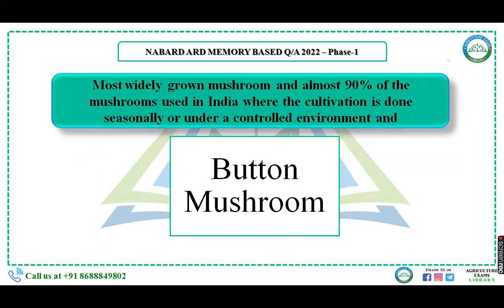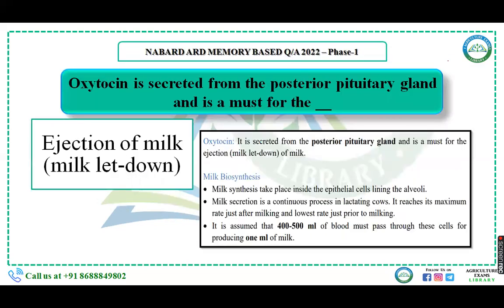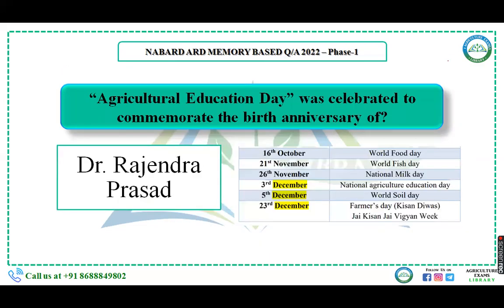The most widely grown mushroom, with almost 90 percent of mushroom cultivation in India, done seasonally or under a controlled environment, is the button mushroom. Oxytocin is secreted from the posterior pituitary gland and is essential for the ejection of milk — this question was also asked in IBPS. Agricultural Education Day is celebrated on the birth anniversary of Dr. Rajendra Prasad; National Agriculture Education Day is on 3rd December, World Soil Day on 5th December, and Farmers' Day on 23rd December.